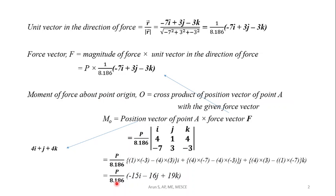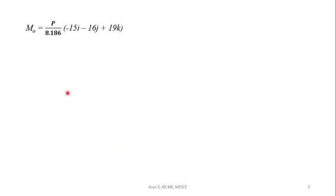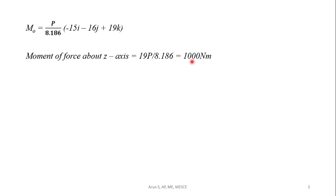Expanding the determinant, we get the moment vector as (P/8.186) × (-15i - 16j + 19k). The x-component gives Mx, the y-component gives My, and the z-component gives Mz.